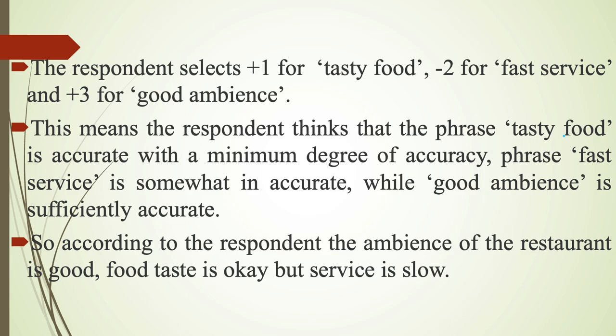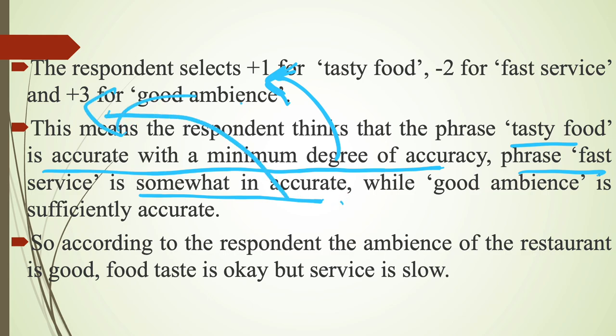So there are 3 different ratings on 3 different parameters. According to that, this means the respondent thinks that the phrase tasty food is accurate with a minimum degree of accuracy because of plus 1. It is the starting point of accuracy. Whereas the phrase fast service is somewhat inaccurate. Why? Because for fast service it gives minus 2 point. So it is inaccurate. While good ambience is sufficiently accurate. Why is it sufficiently accurate? Because there is a plus 3 rating for good ambience by the respondent.